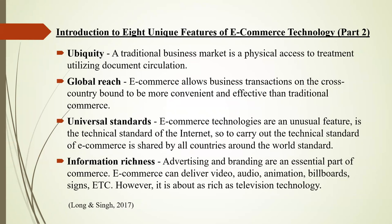Let's begin with a short introduction to the eight components. Ubiquity is the traditional business method of how documentation of products and services is delivered to the customer. Global reach means how the business reaches from one place to another, like one country to another. Universal standard means the company upholds rules, regulations, and technology to maintain product safety and other features for the consumer or business.